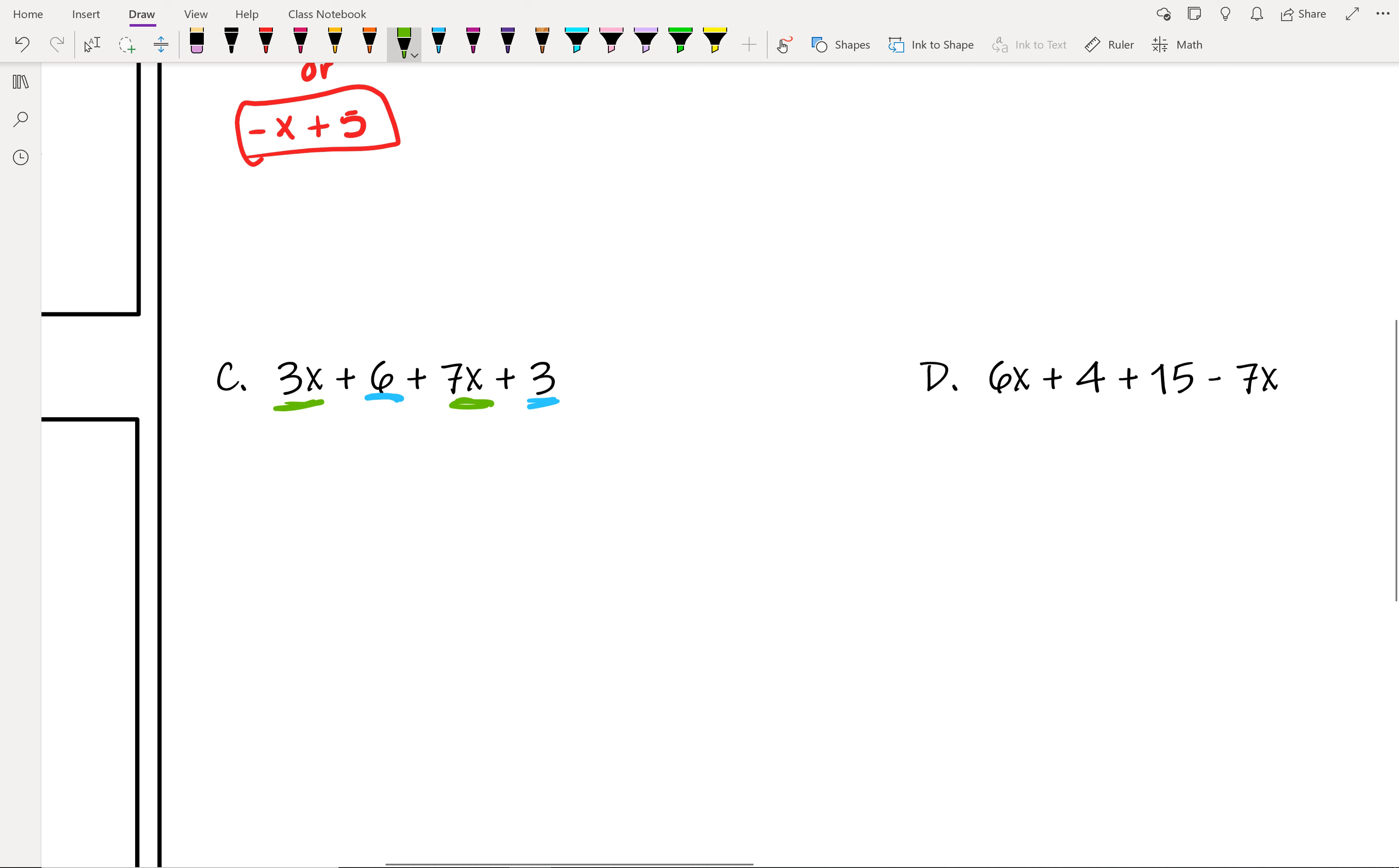So now that we have that, why don't you guys rewrite this with the like terms together. So what would this be rewritten as so that we could combine? Alright, so you would write the 3x plus 7x. We move those around. And then plus 6 and plus 3.